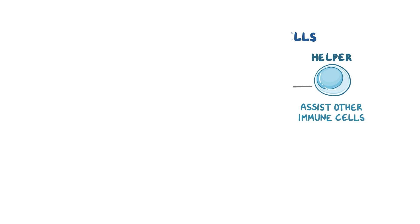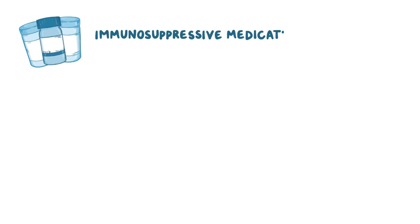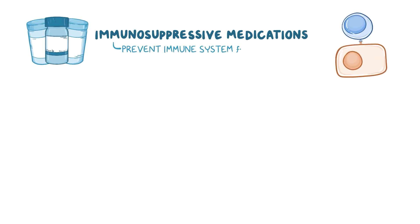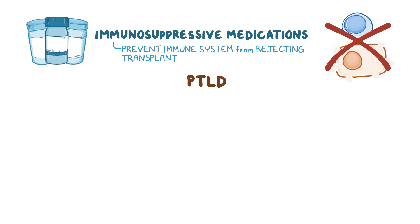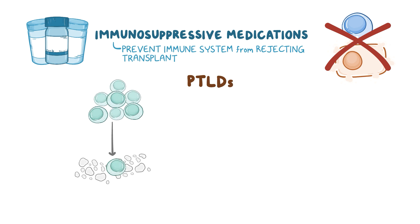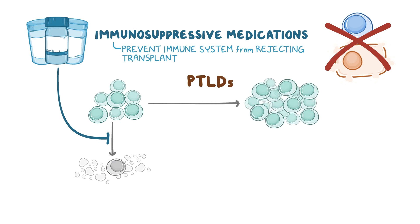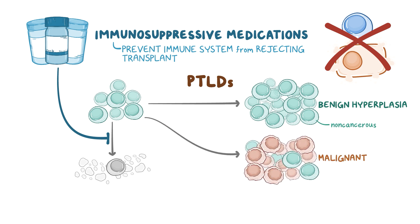When people receive a transplanted organ or stem cells, they also must take immunosuppressive medications to prevent the immune system from rejecting or attacking the transplant. In PTLDs, immunosuppression also prevents the destruction of abnormal lymphocytes that exhibit uncontrolled replication. Resulting uncontrolled growth of lymphocytes can either be a benign hyperplasia, meaning there's a large collection of non-cancerous cells, or the cells can become malignant, resulting in a cancer called lymphoma.